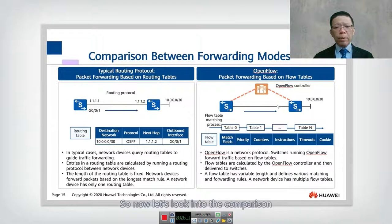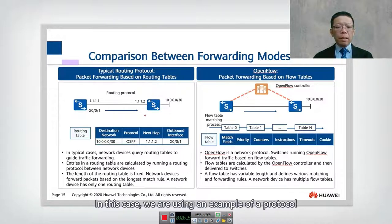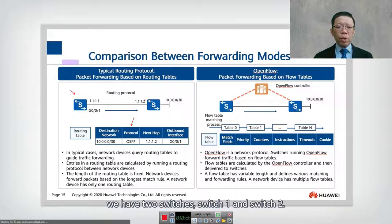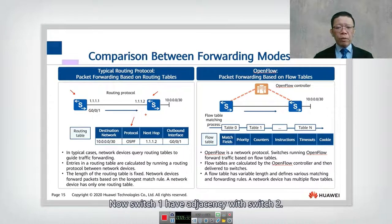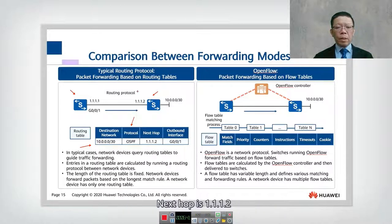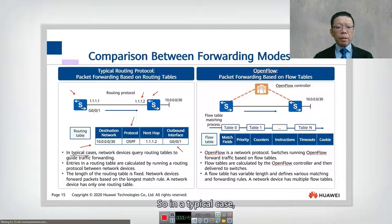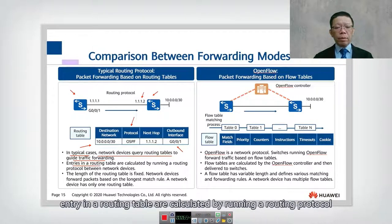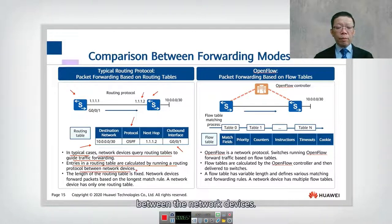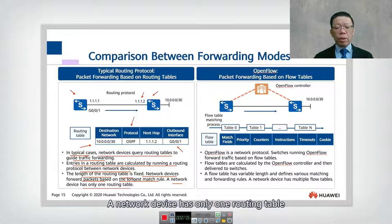Now let's compare the forwarding modes between a typical dynamic routing protocol — in this case OSPF — versus OpenFlow packet forwarding. With traditional routing, switch one has adjacency with switch two. The destination network 10.0.0.0/30 is reached via next hop 1.1.1.2, with outbound interface GigabitEthernet 0/0/1. Network devices query the routing table to guide traffic forwarding, entries are calculated by routing protocols, and the routing table has a fixed length based on longest-match rules.